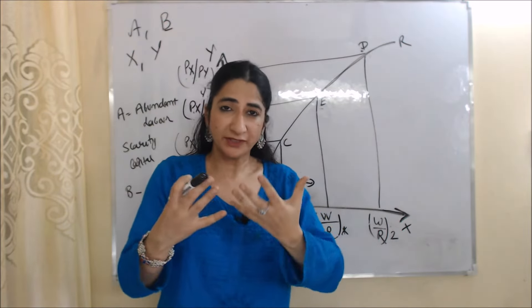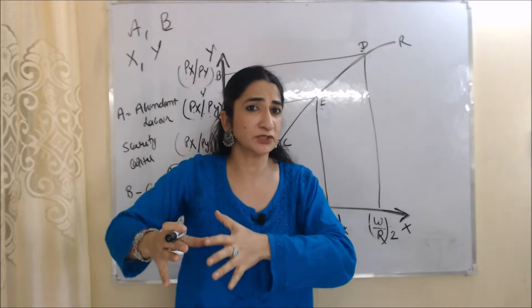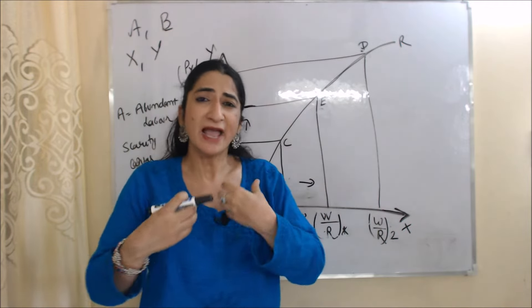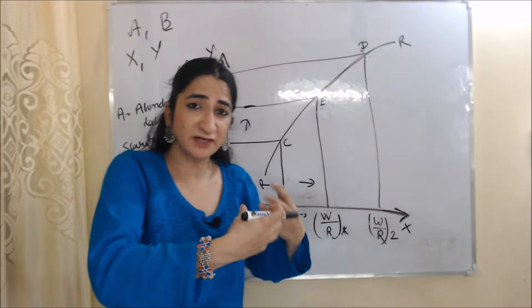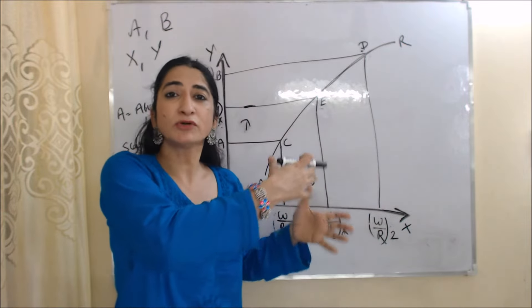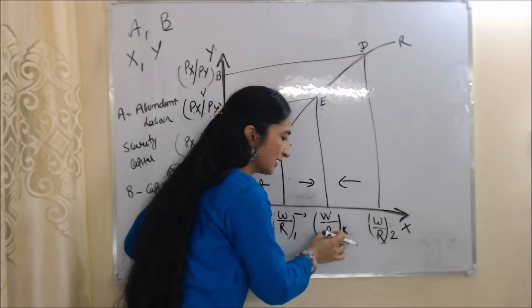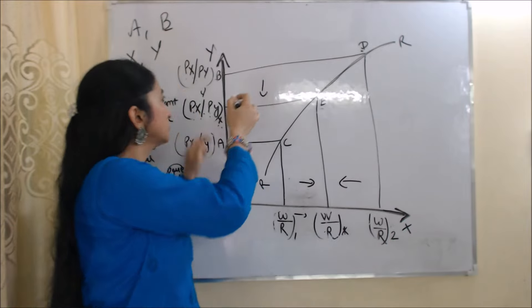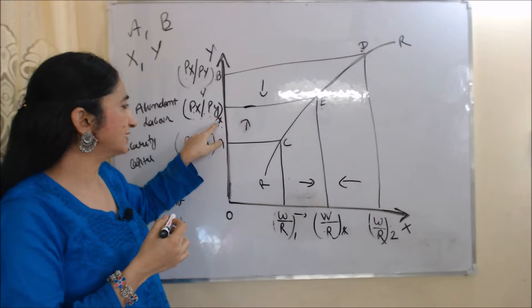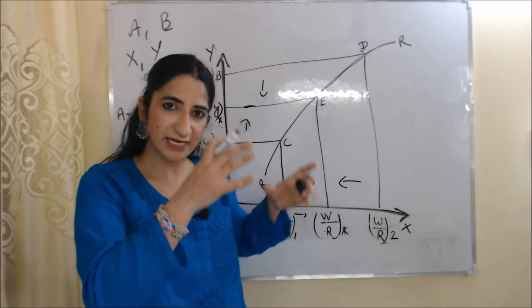Country B after trade increases the production of capital intensive goods Y but reduces the production of labor intensive goods X, because country B has abundance of capital and scarcity of labor. As country B reduces the production of X, it reduces the demand for labor. As labor demand reduces, wage rate also reduces in country B — wage rate reduces from W/R_2 to W/R*. As wage rate reduces, price of labor intensive goods X also reduces from Px/Py to Px/Py*, so country B also reaches equilibrium point E.